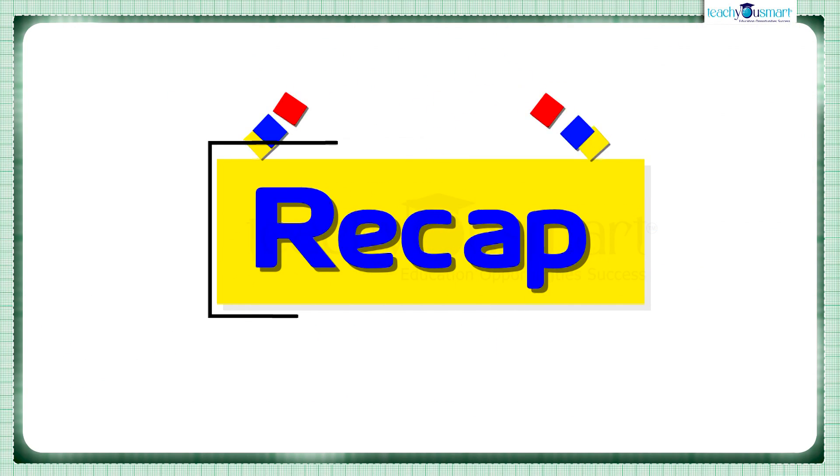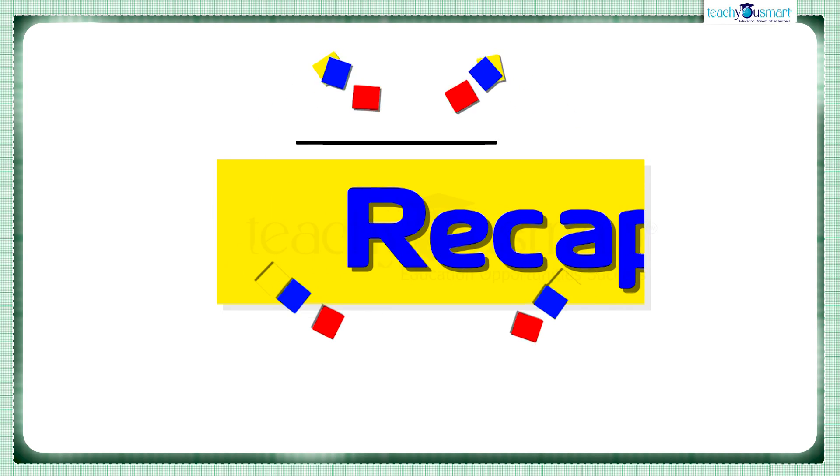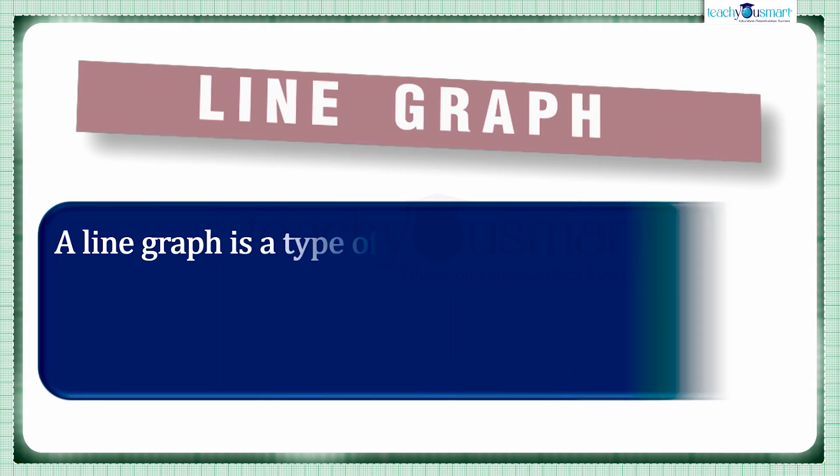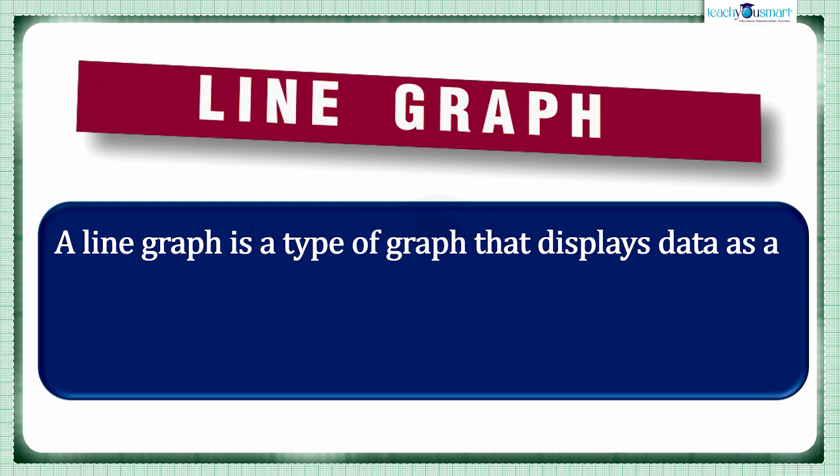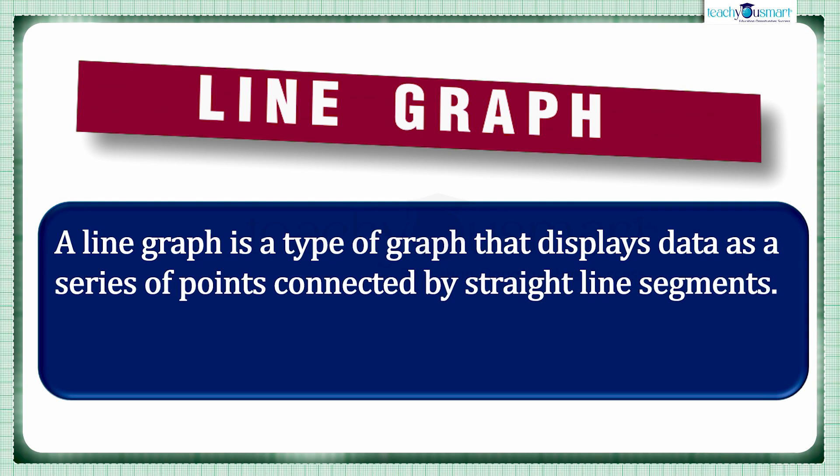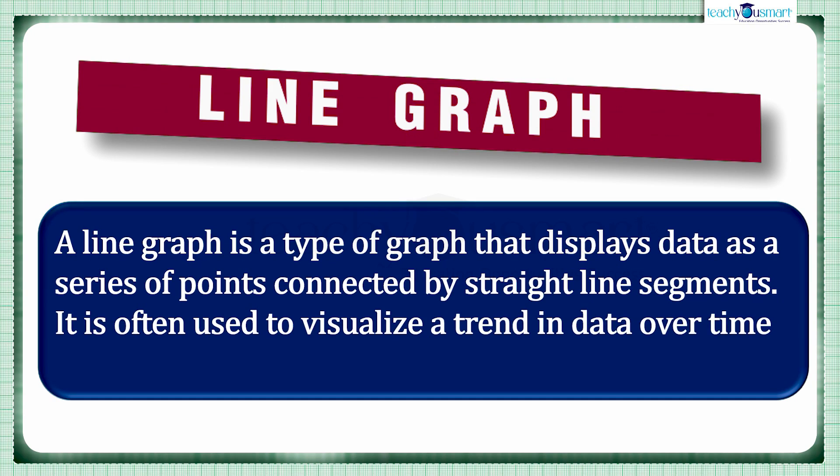Let's recall what we discussed today. A line graph is a type of graph that displays data as a series of points connected by straight line segments. It is often used to visualize a trend in data over time intervals.